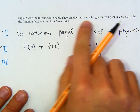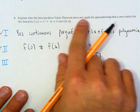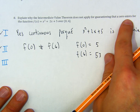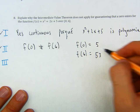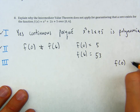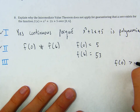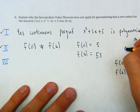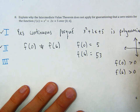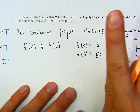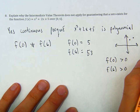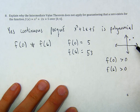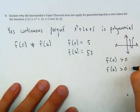But now let's re-read the question: explain why the IVT does not apply for guaranteeing that a zero exists. Notice that both f of 0 and f of 6 are positive — f of 0 is greater than 0 and f of 6 is also greater than 0. If you have two points that are above the x-axis, it does not guarantee that it hits the x-axis. It could, but it doesn't guarantee it.